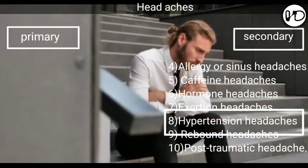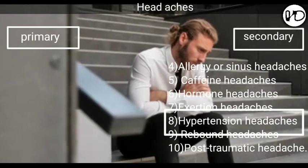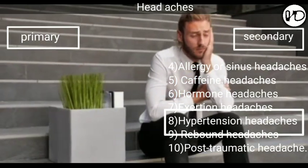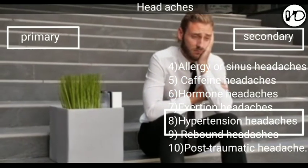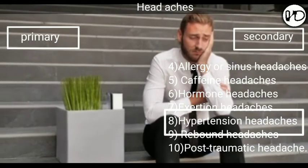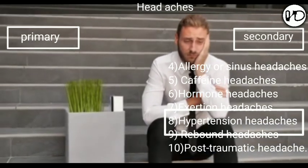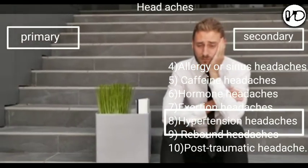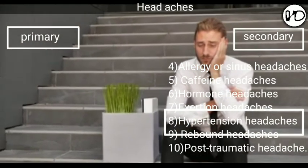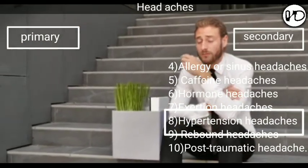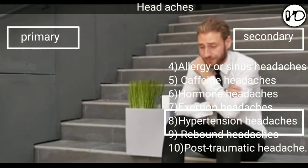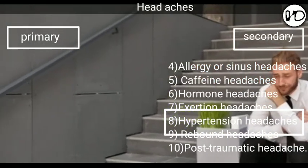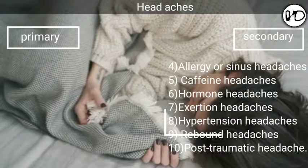8. Hypertension headaches. High blood pressure can cause a headache, and this kind of headache signals an emergency — it occurs when your blood pressure becomes dangerously high. It usually occurs on both sides of your head, is typically worse with any activity, and often has a pulsating quality. You may also experience changes in vision, numbness or tingling, nosebleeds, chest pain, or shortness of breath.